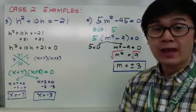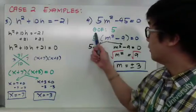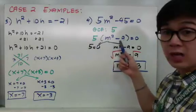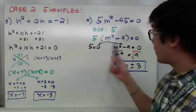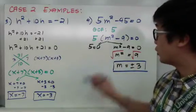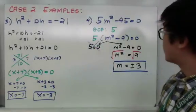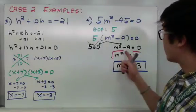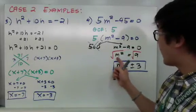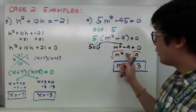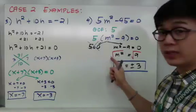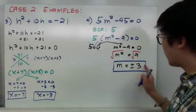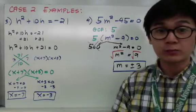For example 4, I have 5m squared minus 45. I'll use the GCF again: factoring out 5 gives 5 times m squared minus 9 equals 0. Separating using ZPP, the factor of 5 equals 0 can be ignored as it produces no solution. For m squared minus 9 equals 0, I add 9 to both sides to get m squared equals 9, then take the square root of both sides. My solutions are m equals plus or minus 3.